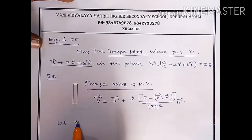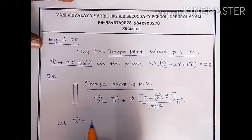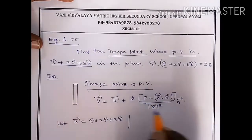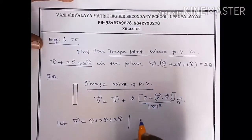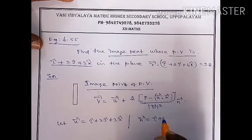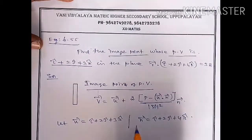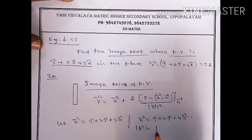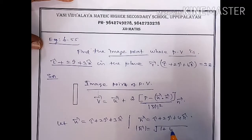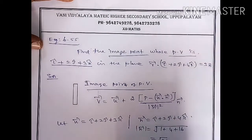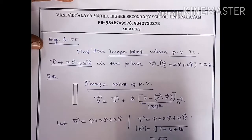First, u vector equal to i cap plus 2j cap plus 3k cap. n vector equal to i cap plus 2j cap plus 4k cap. The magnitude of n vector: square root of 1 plus 4 plus 16, so root of 21. Therefore, n vector whole square equal to 21.